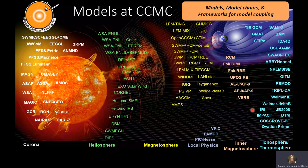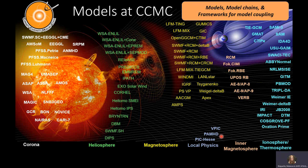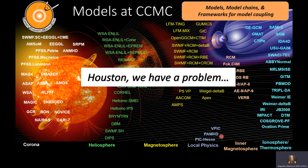Here are a portion of the models that we have at the CCMC. The problem we're facing is that each one of these models, and combinations of models, has its own custom code that performs a fly-through and visualizations custom to that model output. As more models are added, the spiderweb of code and its dependencies keeps growing and it's becoming unmaintainable. So what we're doing at CCMC is applying the capabilities of Komodo to the model outputs that we host.